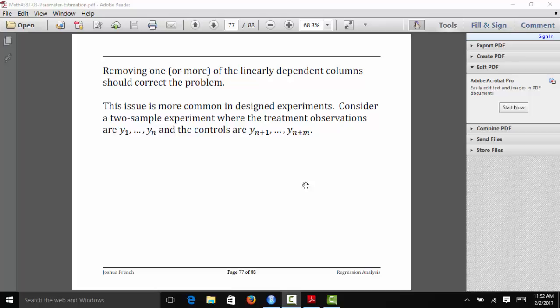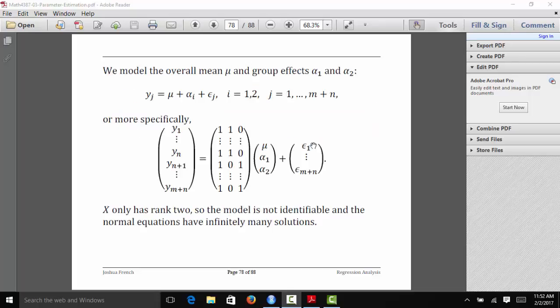Let's talk more about this issue for designed experiments. Let's say that we have a two-sample experiment. Basically, that means we have two different groups that each receive a different treatment. We'll let the first group be denoted by y1 to yn, or at least the responses for the first group are y1 to yn. The responses for the controls, the second set of observations, are yn plus 1 to yn plus m. So we have n observations in the first group and m observations in the second group.